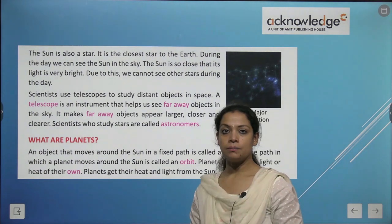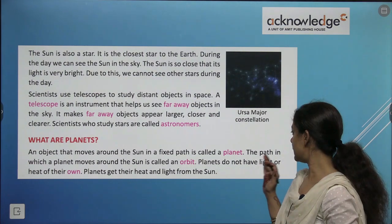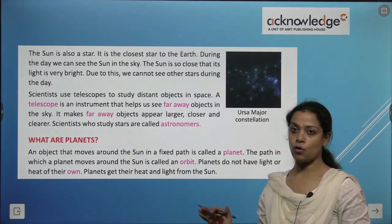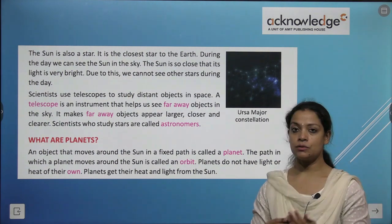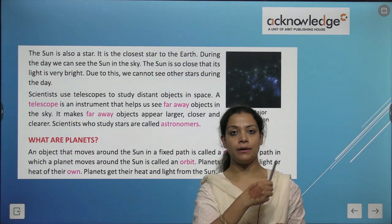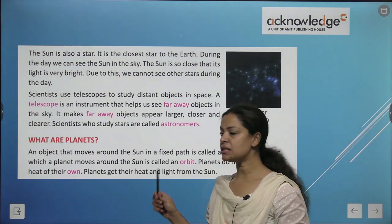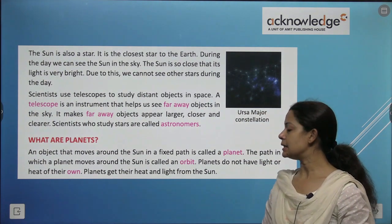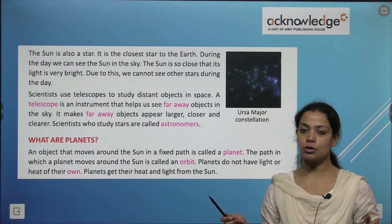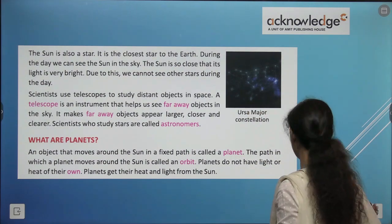What are planets? An object that moves around the sun in a fixed path is called a planet. The path in which a planet moves around the sun is called an orbit. Planets do not have light of their own — they get their heat and light from the sun.